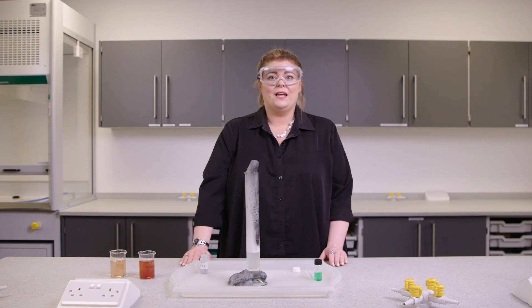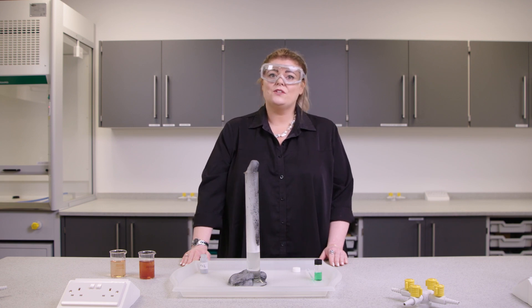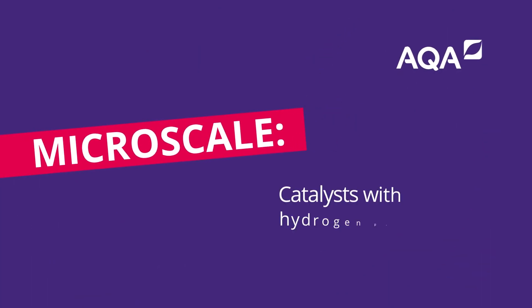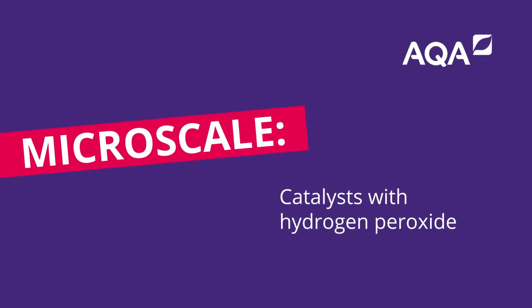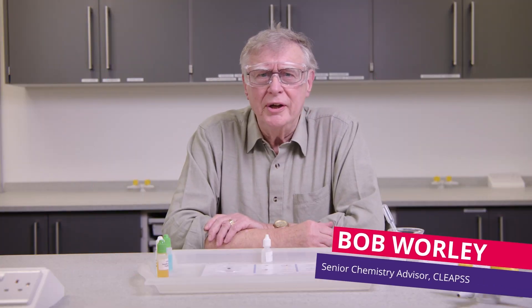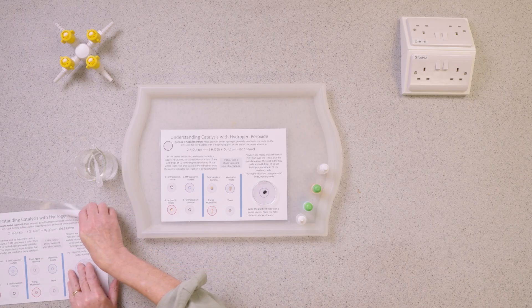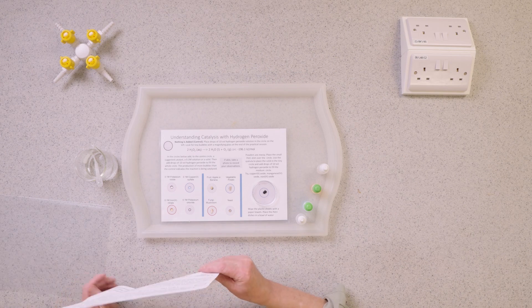I'm now going to hand over to Bob Worley, Chemistry Advisor for CLEAPSS, who will be taking you through some microscale experiments. Hello, I'm Bob, the Senior Chemistry Advisor for CLEAPSS. You've seen demonstrations using very concentrated hydrogen peroxide — we're going to use a more diluted solution of hydrogen peroxide in a microscale experiment suitable for students, to identify common catalysts that you might find in school and everyday life like fruit and vegetables. This worksheet can be found in the related resources section.